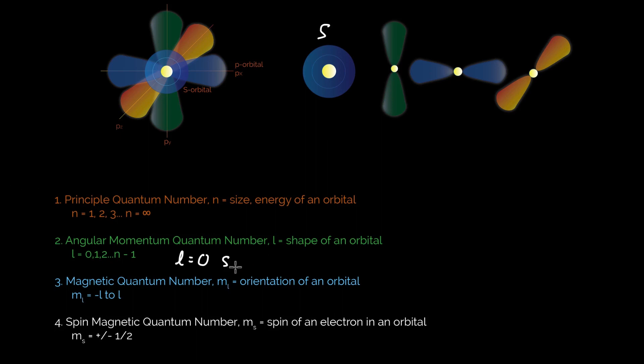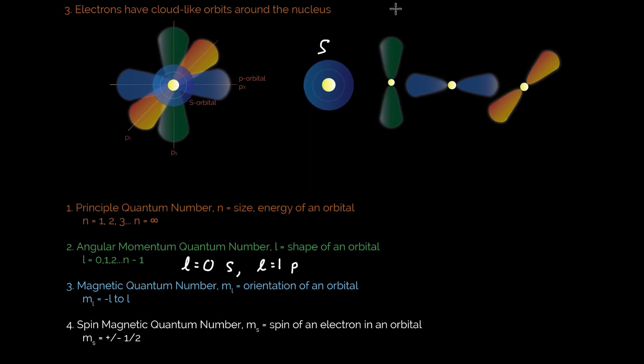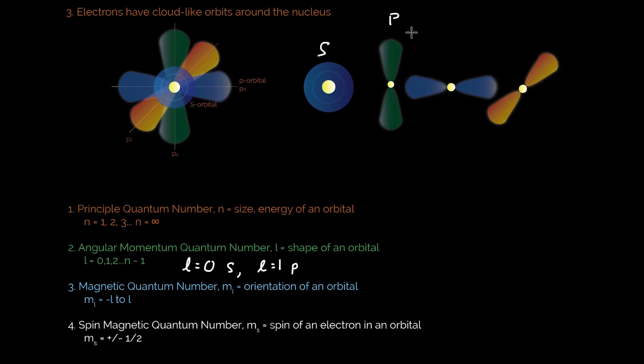And then if l equals 1, that means your shape is going to be a p orbital, and your p orbitals are all right here. And then you can get into more complex shapes. And so you can give l equals 2, and that would be a d orbital. Or you can do l equals 3, and that's an f orbital.